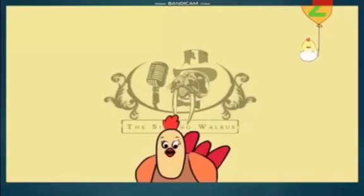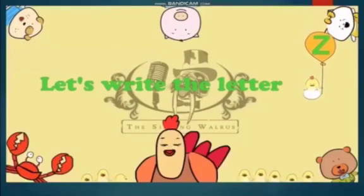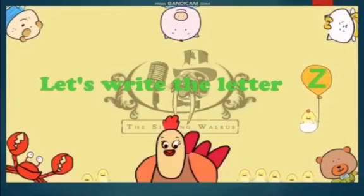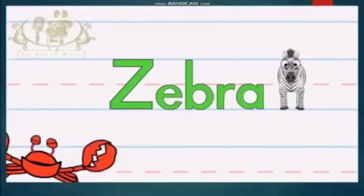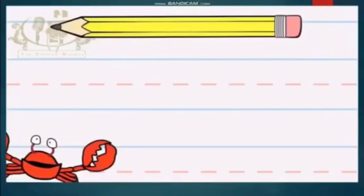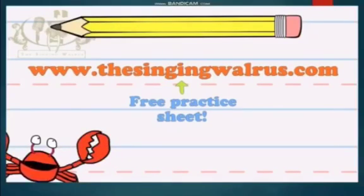The Singing Walrus: Let's write the letter Z. Hey kids, now we're going to write the letter Z as in zebra, Z, Z, zebra. You'll need a practice sheet and a pencil. Go to our website to download a free practice sheet.